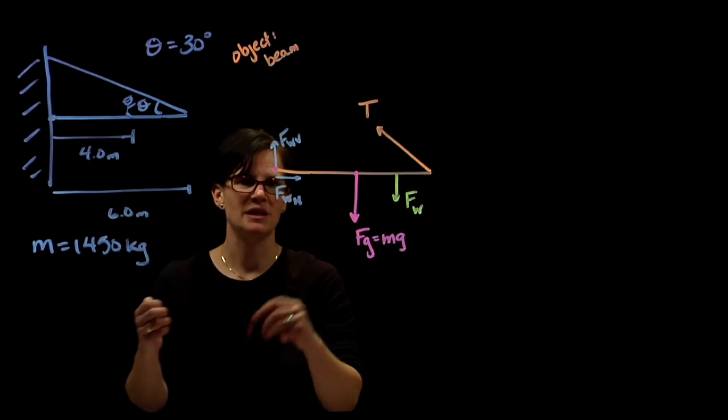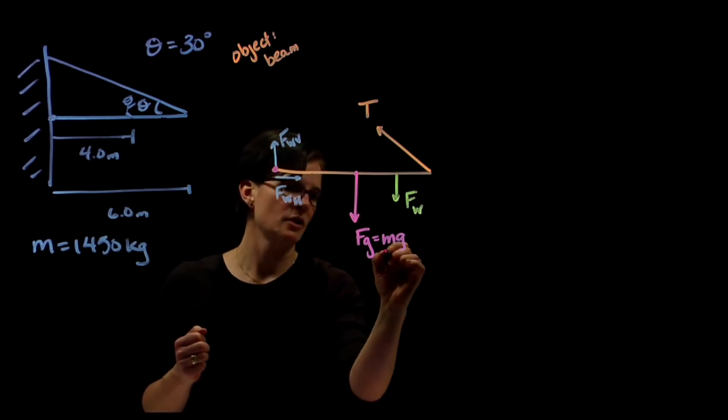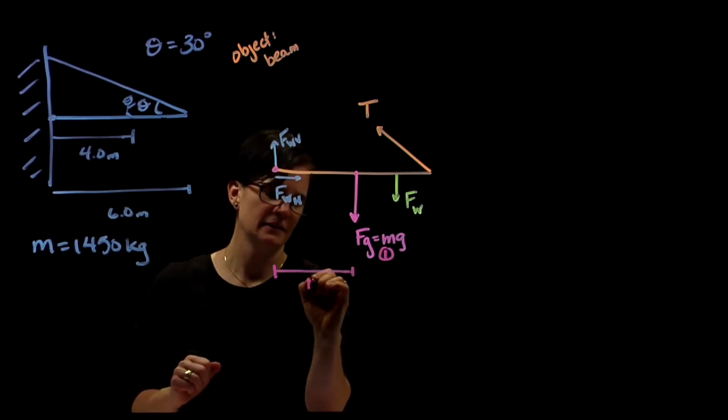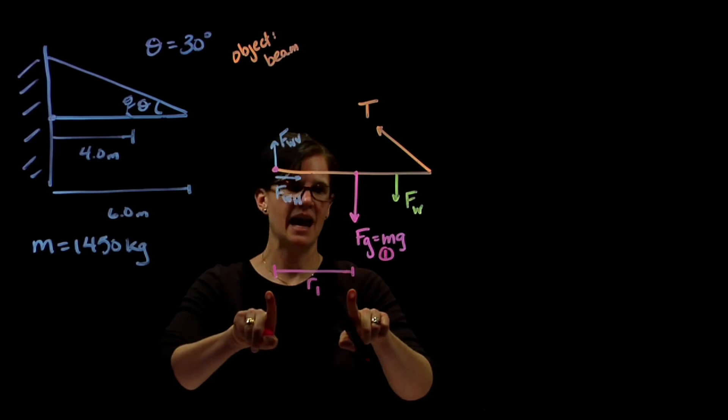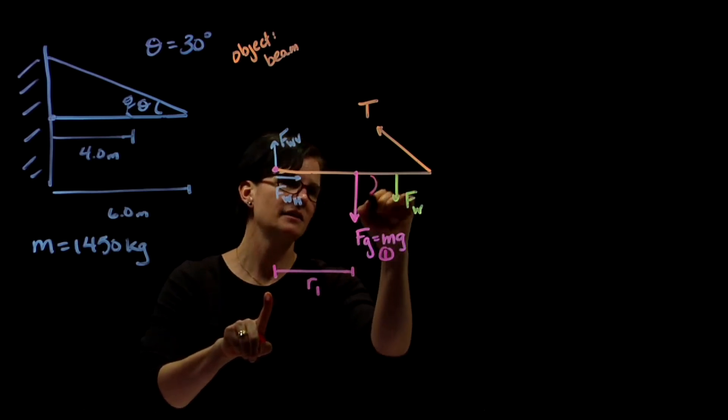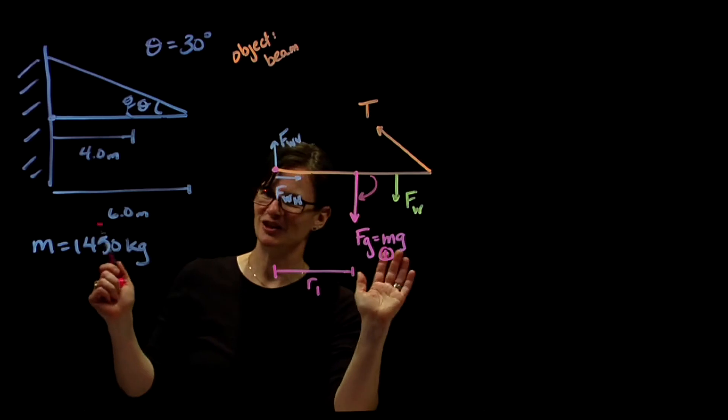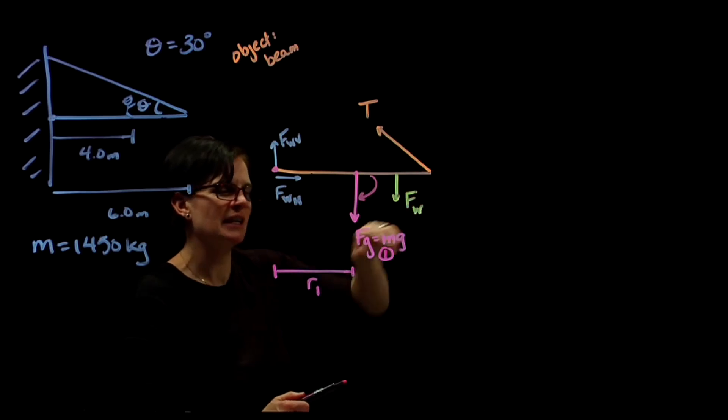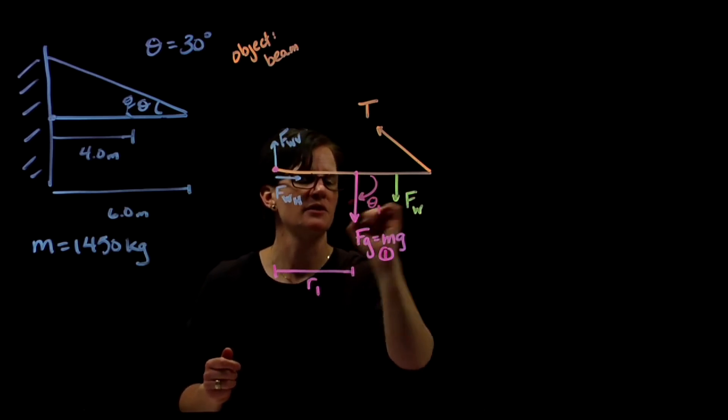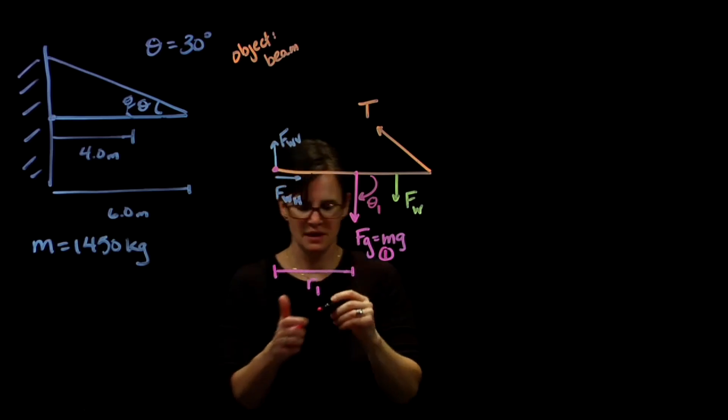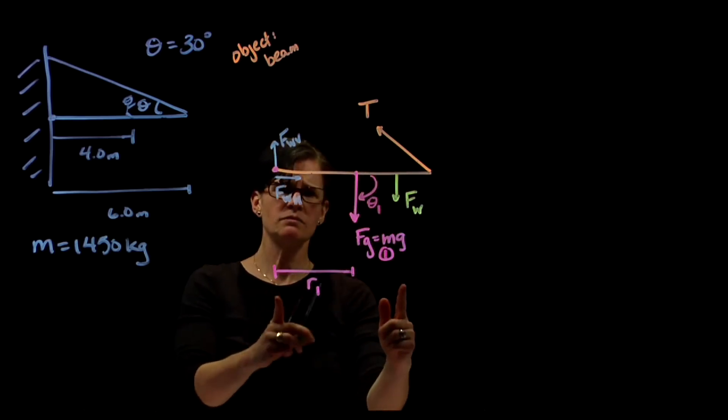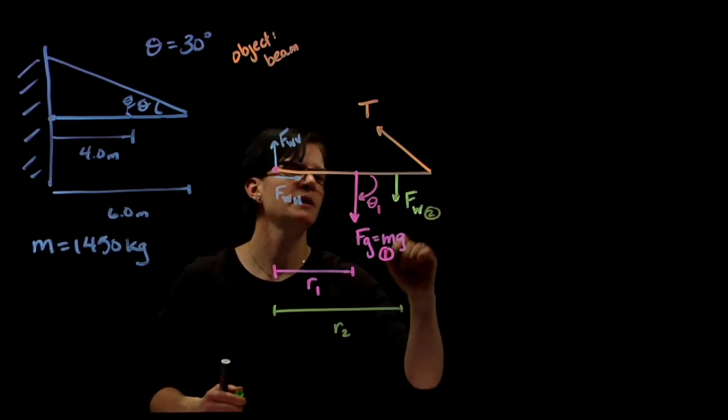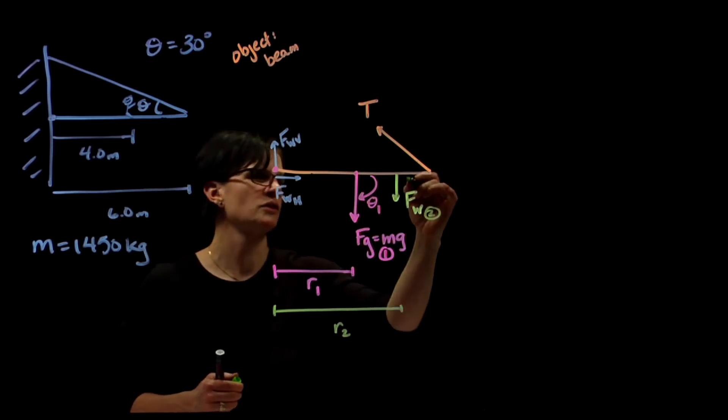Let's look at these torques on these specific locations. We need the radii and we need the angle. Our first radius, we'll call the force of gravity force number one. The radius is between the pivot point and the force that's acting. And the angle, we extend our right hand and curl in the direction of the force. So there's my angle one. Force number two extends from the pivot point to the worker. Extend the radius, curl to the force.